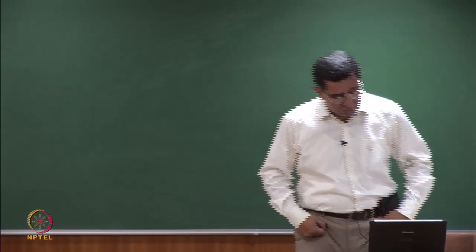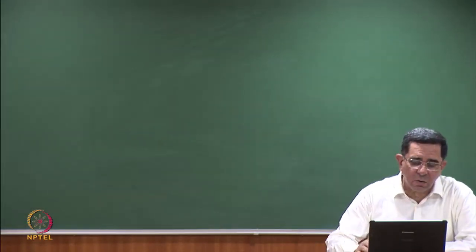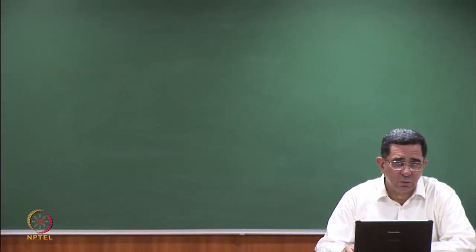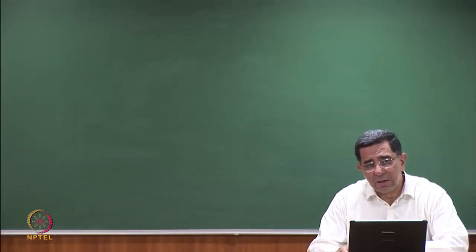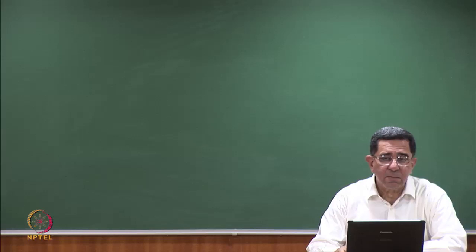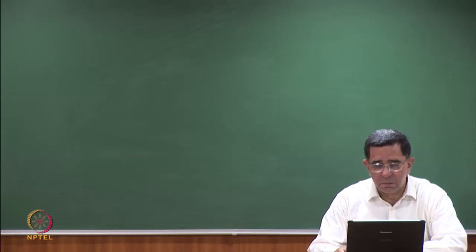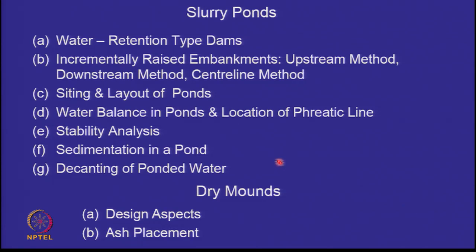What is presented here relates mostly to coal ash disposal, but it is equally applicable to mine tailings disposal. When discussing slurry ponds, we are looking at lean concentration slurry disposal, which is prevalent in most ponds in India. Slurry ponds can have two types of retaining structures: water retention type dams or incrementally raised embankments. We will discuss both of these and compare them.